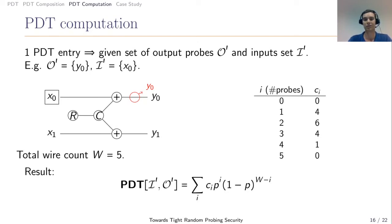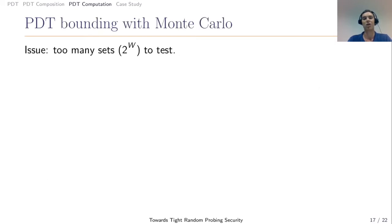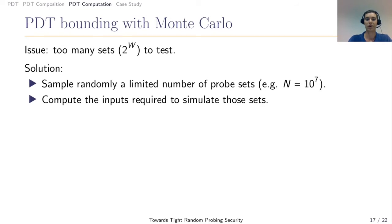And we get the PDT entry. So this works well. However, there is one main limitation that we have to iterate over many, many sets. Actually, there are two to the W possible sets of internal probe leakage. And if the gadget becomes not so small, like W can be 20, 30, 40, then it becomes infeasible to do. So our solution to this would be to not consider all the possible sets. But for each size I, we sample a limited number of sets that's fixed in advance. For instance, 10 millions.